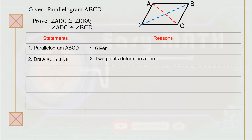Second statement: we're going to draw two diagonals — segment AC and segment DB. The reason is that two points determine a line. Remember that in a parallelogram, any two opposite sides are congruent. So segment AB is congruent to segment DC, and segment AD is congruent to segment BC, because of parallelogram property number one.